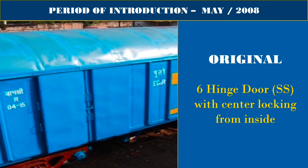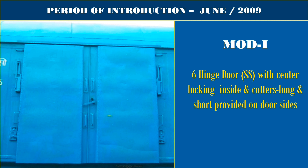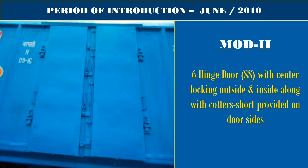The image shown is of the original 6-hinge door of stainless steel with center locking from inside, with a period of introduction of May 2008. The next image is of Modification 1 Design — a 6-hinge door of stainless steel with center locking inside, with short and long quarters provided on door sides, introduced in June 2009.